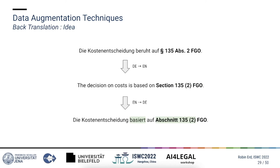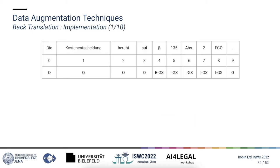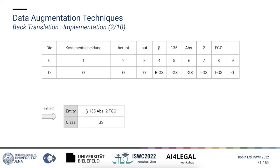The third and last technique, back translation, is a bit different from the other two. Here we translate a sentence to a so-called pivotal language and then back to the original language. The reason for this is that we hope it introduces changes in the sentence — not only superficial changes like replacing words with their synonyms, but also changes in sentence structure. The setup is similar to the other examples and we will now go through the process of creating a modified copy of this sentence. First we extract all entities and their class from the sentence; in this case it contains only one entity.